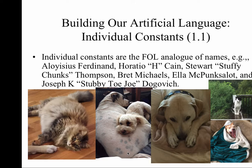What we want to think about when thinking about the building blocks of this new artificial language is how this artificial language is going to help us see the logical structure of our ordinary language. There are various versions of the notation one can use, but our authors have chosen what you will see in just a moment. The first piece of technical terminology is individual constants — the term for individually named entities. As you can see in this slide, there are photos of several adorable puppies and kitties.